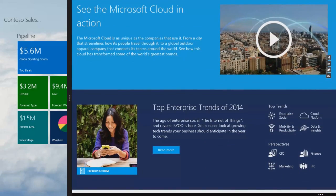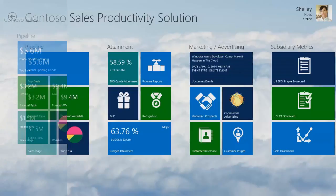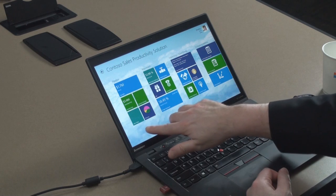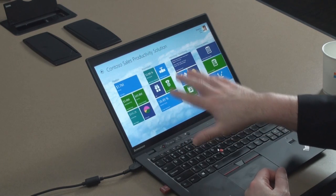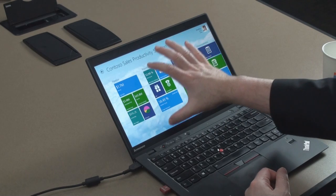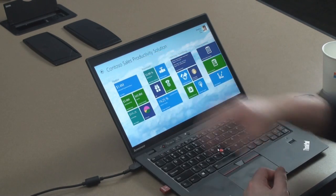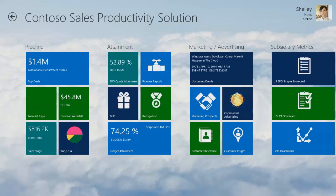On the left you've got pipeline and attainment — attainment is quota, and pipeline is how we're doing in terms of filling our pipeline for sales. I'm going to dive into those in more detail in the next video.